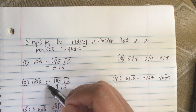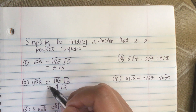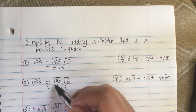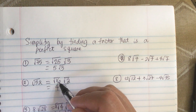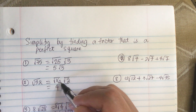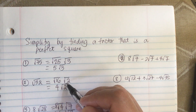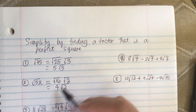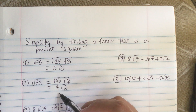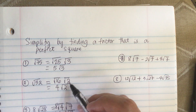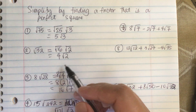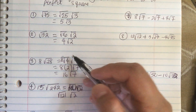Square root of 32. Square root of 32 is equal to the square root of 16 times the square root of 2. Square root of 16 is equal to 4, so the answer is 4 square root of 2.